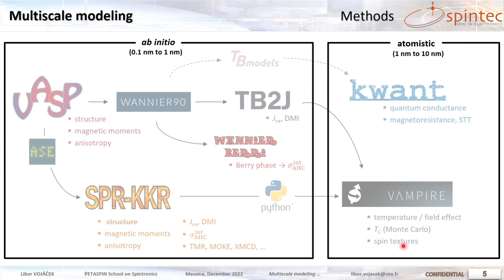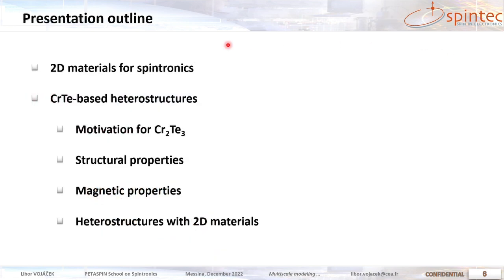Why multiscale? We start from ab initio DFT calculations, which are systems typically in length scales of several nanometers maximum, and we can build approximative models to simulate magnetization dynamics or transport in larger scale systems several tens of nanometers. I will talk about these packages, but first let me motivate 2D materials for spintronics, then tell a bit about chromium telluride, its structure and magnetic properties, and then its heterostructures with other 2D materials.